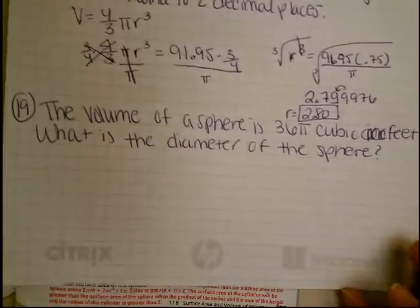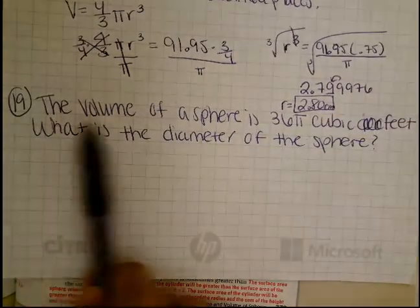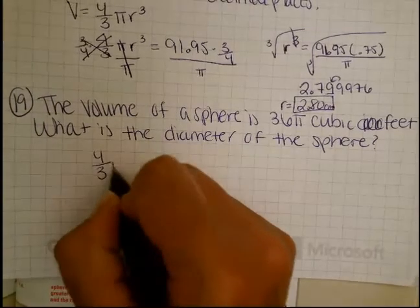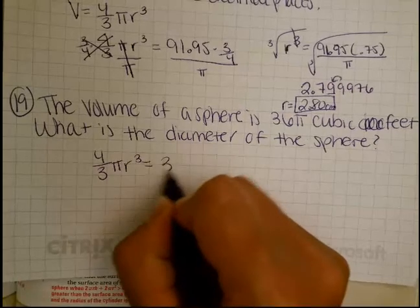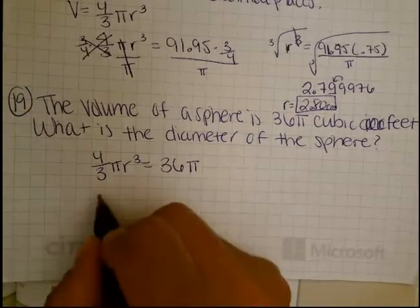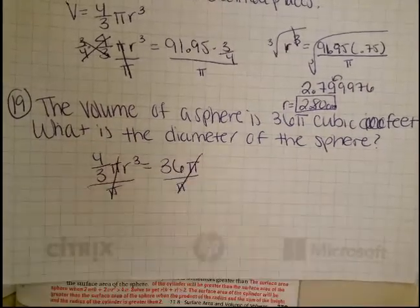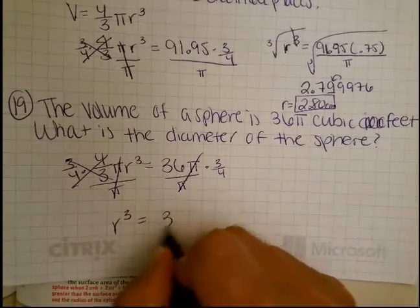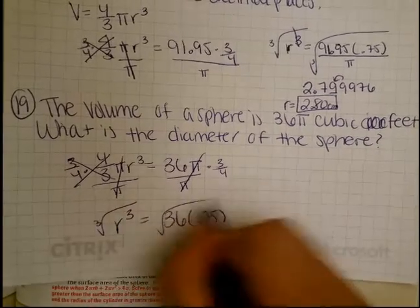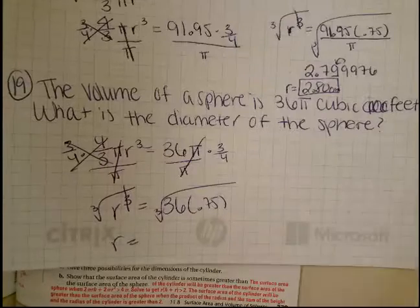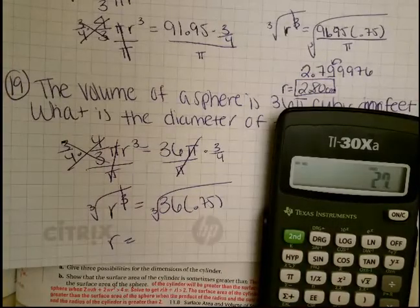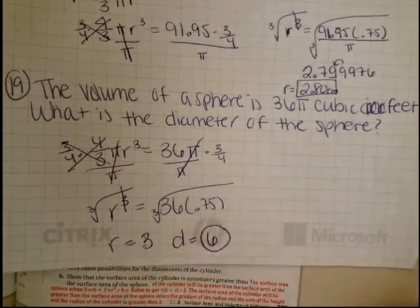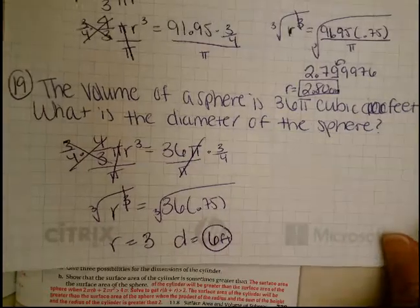Number 19. The volume of a sphere is 36 pi cubic feet. What is the diameter of the sphere? The volume of the sphere is 4 thirds pi r cubed, and in this case they're giving us that as 36 pi. We're going to divide by pi on both sides and our pis are gone. We are going to multiply by 3 fourths on both sides. We get r cubed equals 36 times 0.75. Cube root. The radius equals 36 times 0.75 equals cube root. We get 3. So if my radius is 3, my diameter is twice that, it is 6. This is in feet. 6 feet.